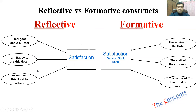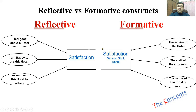Even if you remove one item — say 'I recommend this hotel to others' — this is only possible if the person is satisfied. So in reflective constructs, one item has the power to independently measure the construct. Even after removing some items, the scale still has the power to measure your construct.